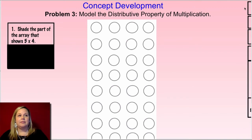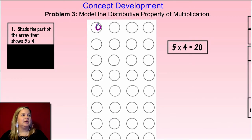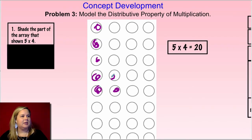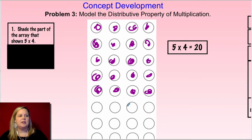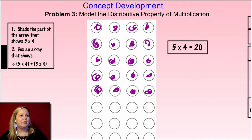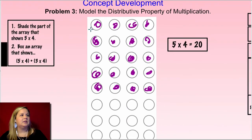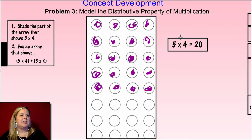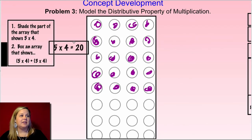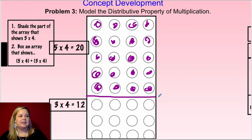Here's what I came up with. I shaded five times four first — five rows. Then I broke it down into three times four as my next part, so I box around rows six, seven, eight. So this side is five times four, and this other side down here is three times four. You can draw a line across to see the difference. Five times four is really 20, and three times four is 12, so that's where I get my 20 plus 12.